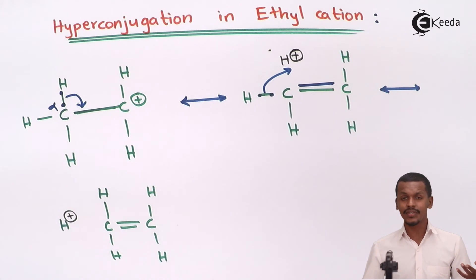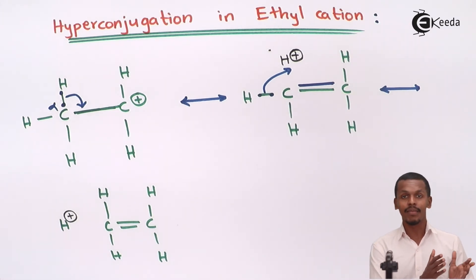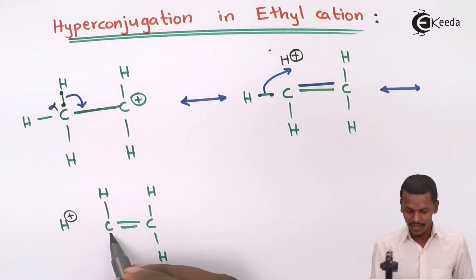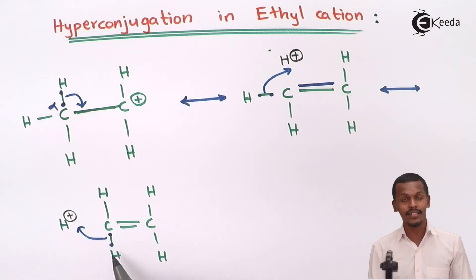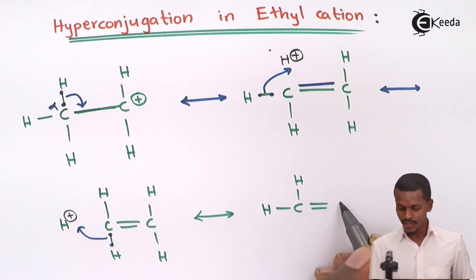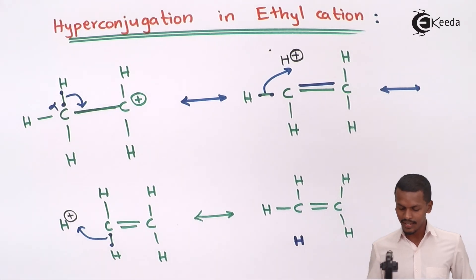This delocalization will go on until it stabilizes all the positive charge present in the ethyl cation. Similar to resonance, this delocalization of electrons will continue throughout the whole ethyl cation, provided that we have an adjacent carbon atom consisting of a sigma bond between carbon and hydrogen. A further possibility exists where these two electrons shift onto the adjacent hydrogen atom, making that hydrogen carry a positive charge, and the structure is promoted with the double bond remaining as it is.